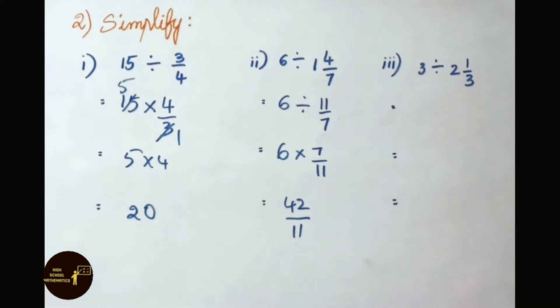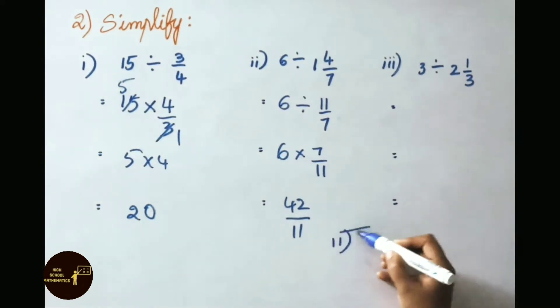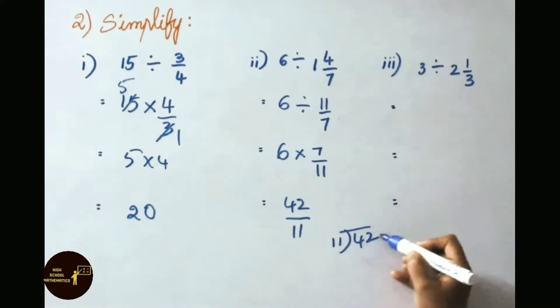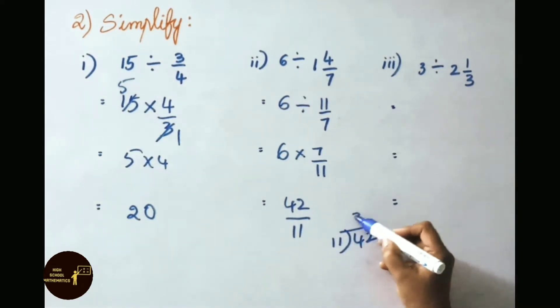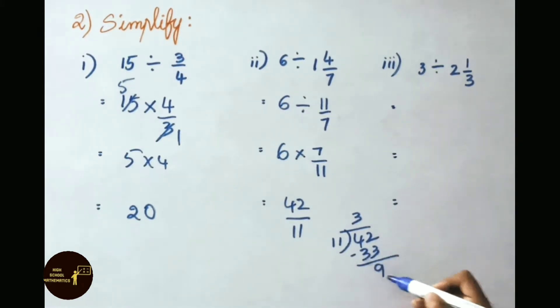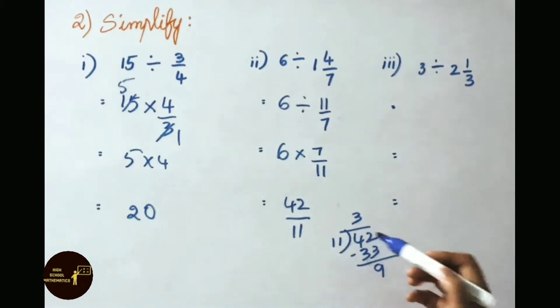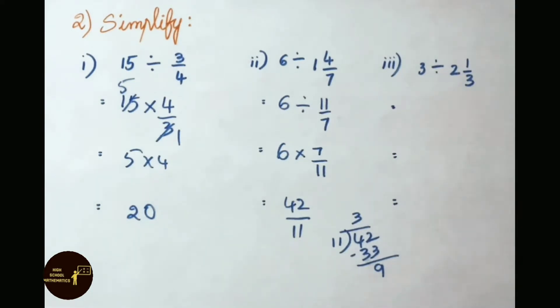This can be simplified by doing the division. 11 threes are 33. Subtract and we get a remainder of 9. So the answer is 3 and 9 by 11.